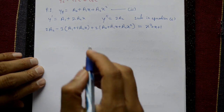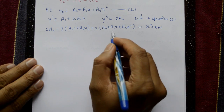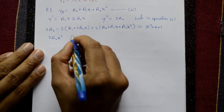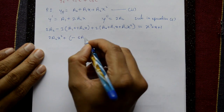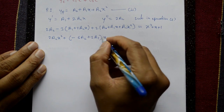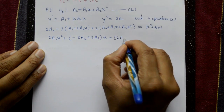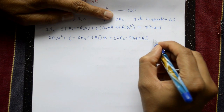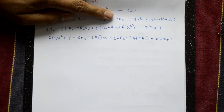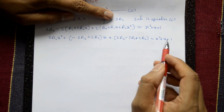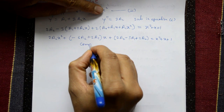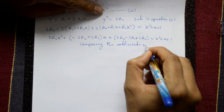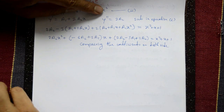Expanding all brackets and collecting like terms: 2a₂x² + (-6a₂ + 2a₁)x + (2a₂ - 3a₁ + 2a₀) = x² + x + 1. Now we compare coefficients of x², x, and the constant term on both sides.